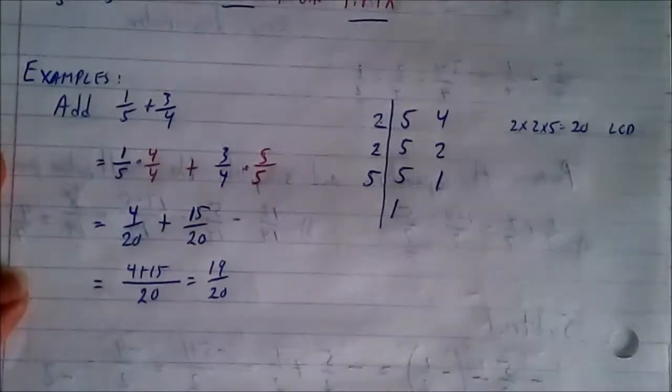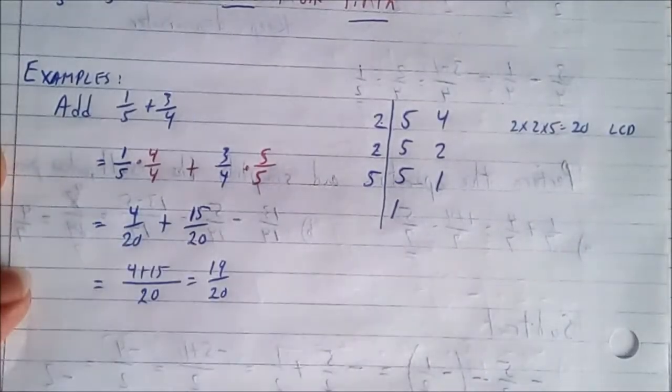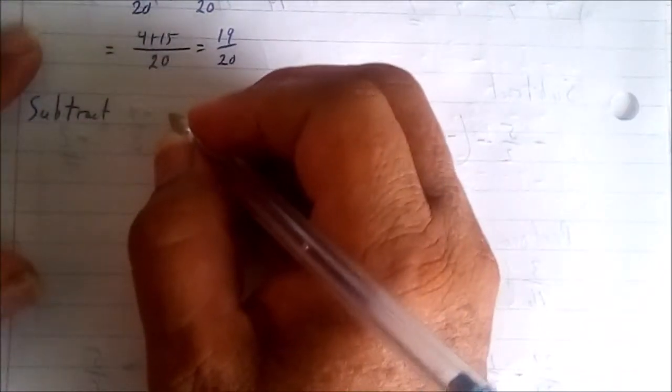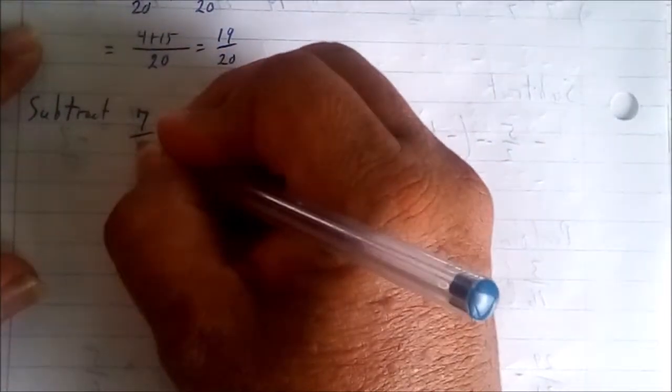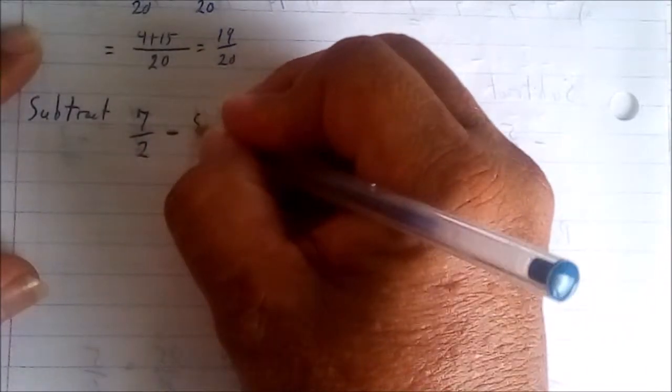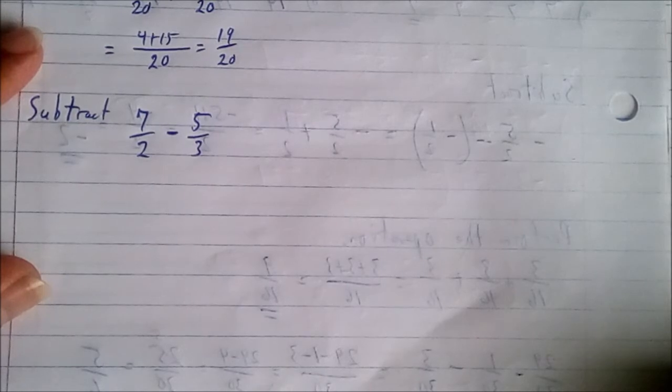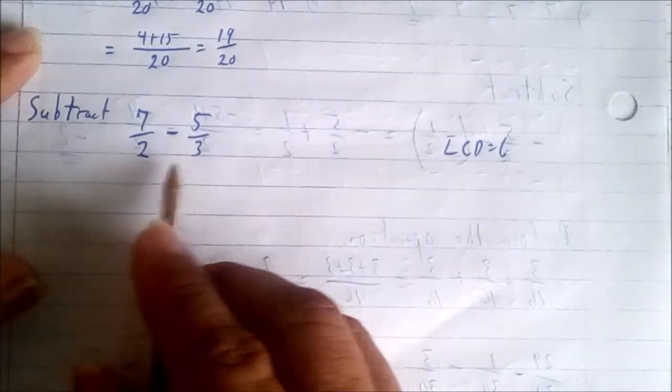That is how you add fractions that have different denominators. Now let's do the subtraction. Subtract: We have seven over two take away five over three. The way you're going to do this is as follows. You're going to have to make them have the same denominator again, so what's the LCD of three and two? Simply six.